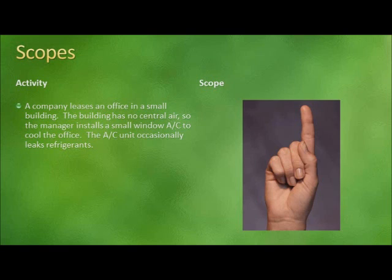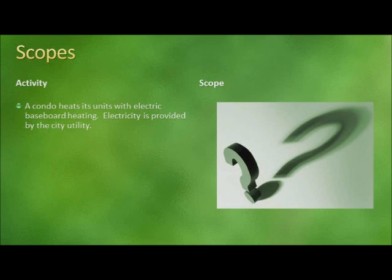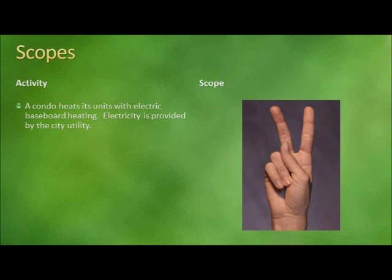In the next example, a condo heats its units with electric baseboard heating. Electricity is provided by the city utility. Is this an example of scope 1, scope 2, or scope 3? This is an example of scope 2 emissions — indirect energy. The energy is being produced off-site at the city utility, and emissions are being generated at that point. However, the energy resulting from those emissions is being used by the condo.